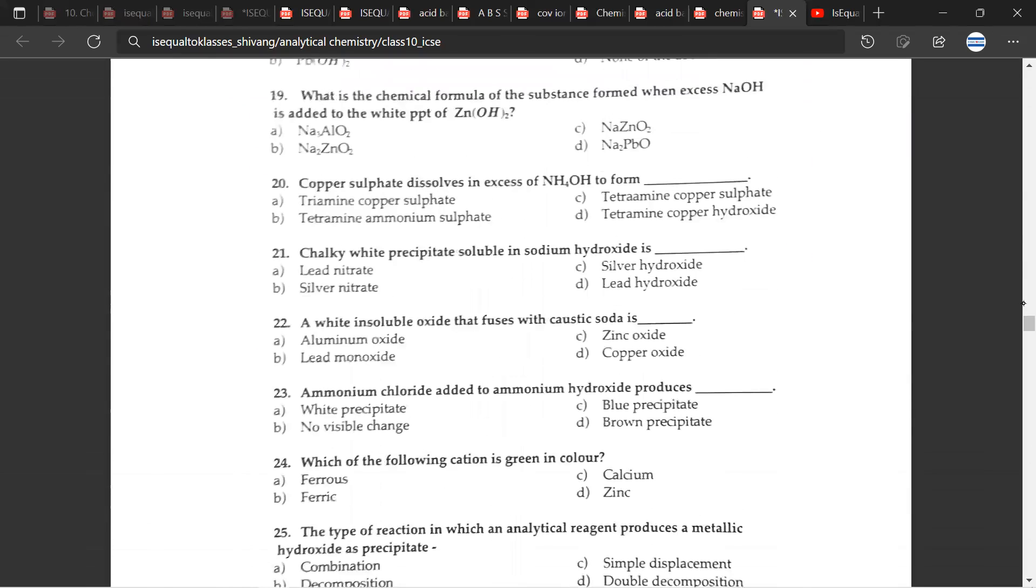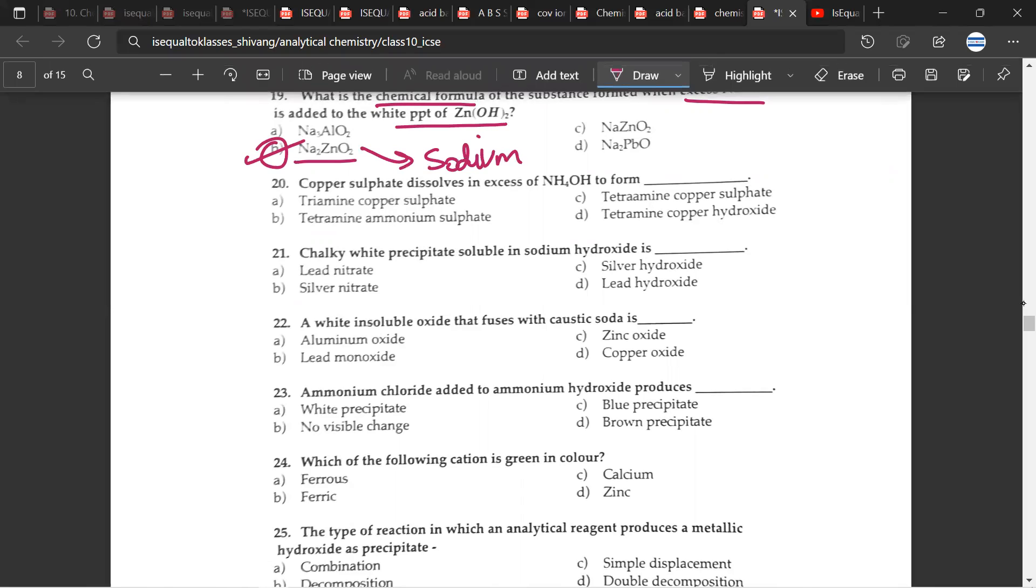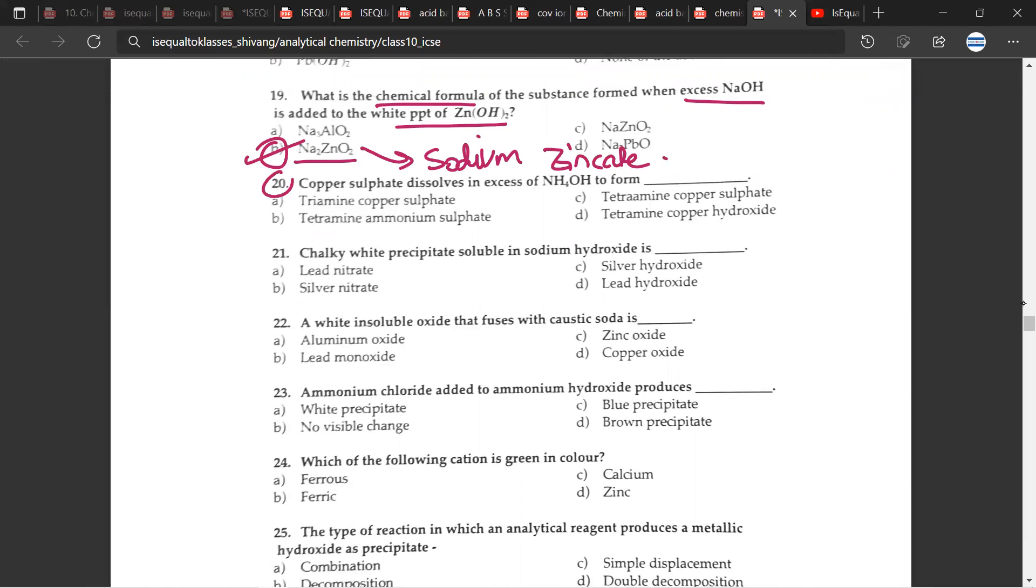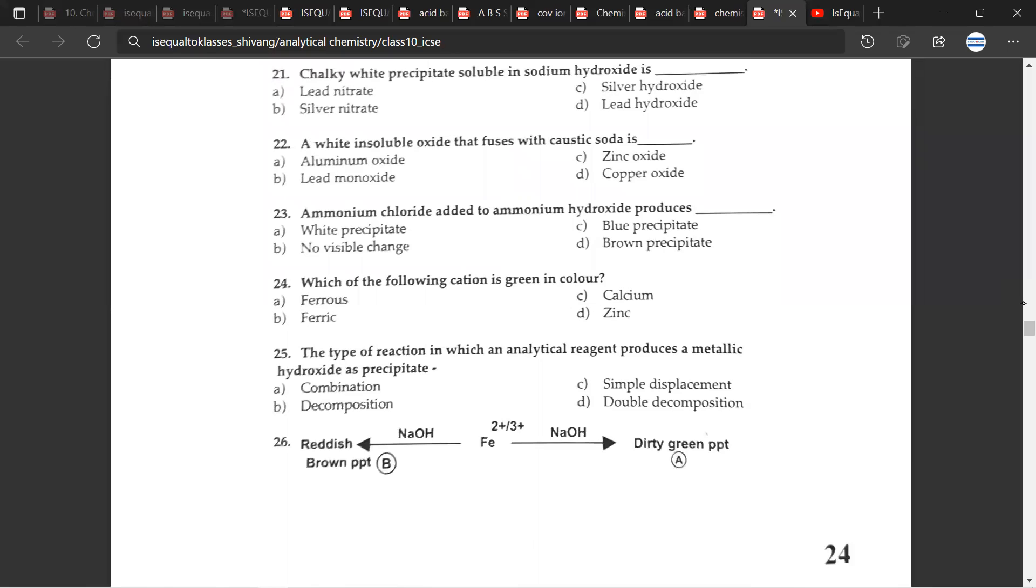Moving on to the 19th question. What is the chemical formula of the substance which formed when excess NaOH is added to white precipitate of zinc hydroxide? So the correct answer for this would be B. We pronounce this as sodium zincate. Let's write it over here, sodium zincate. And yeah, the 20th question. Copper sulfate dissolves in excess of NH4OH to form what? So it forms tetramine copper sulfate. The 21st question. Chalky white precipitate soluble in sodium hydroxide is what? So the correct answer for this would be D, lead hydroxide.